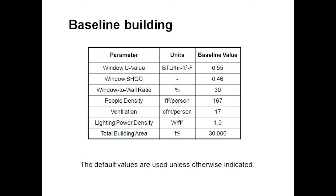The window solar heat gain coefficient is a value of 0.46. The window-to-wall ratio will be set to 30%. The people density of an office is approximately 167 square feet per person, and the ventilation rate for those occupants is 17 CFM per person. The lighting power density established by code for an office building is 1 watt per square foot. And this office building is 30,000 square feet.